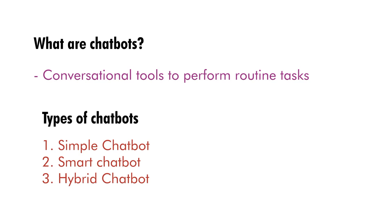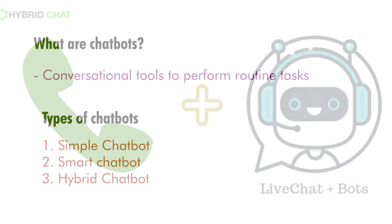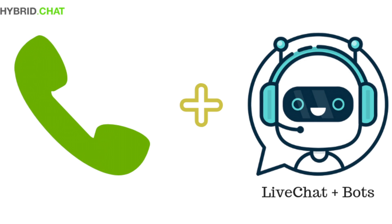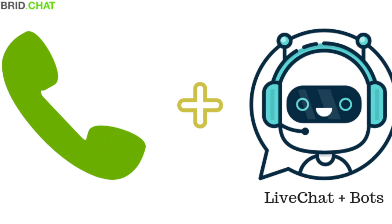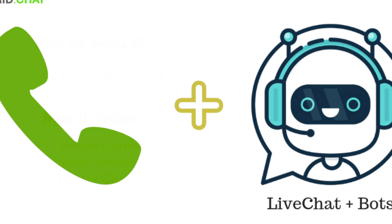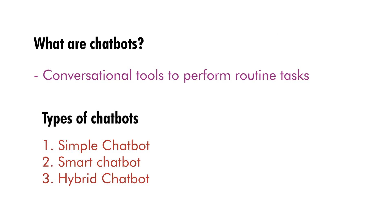For example, virtual assistants. The third type is hybrid chatbots. They are a combination of simple and smart chatbots, meaning they have some rule-based tasks but can also understand intent and context. This makes them a balanced tool for businesses to interact with customers. For example, medical diagnosis — these chatbots can help with medical diagnosis by combining the capabilities of both simple and smart chatbots.